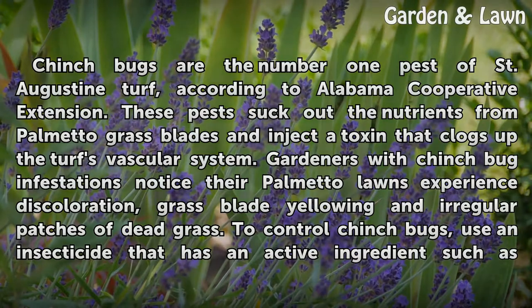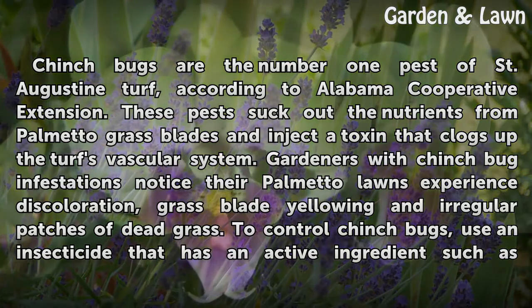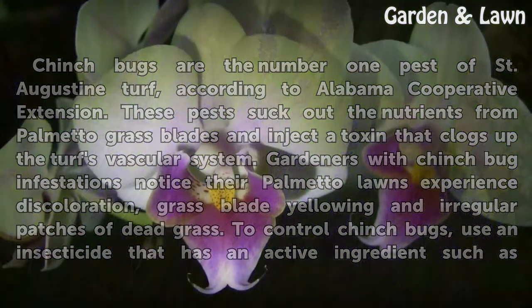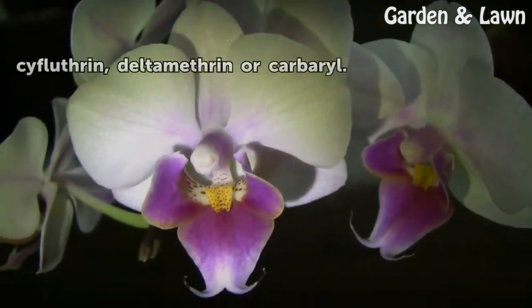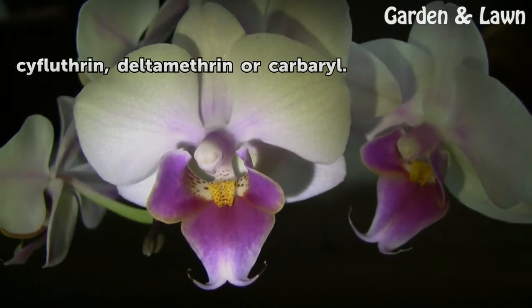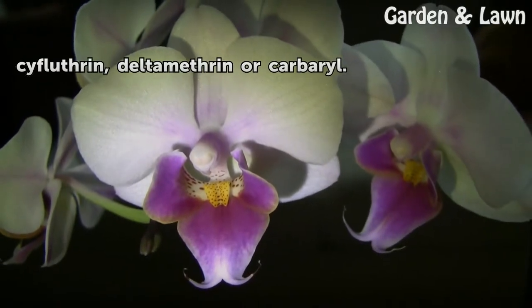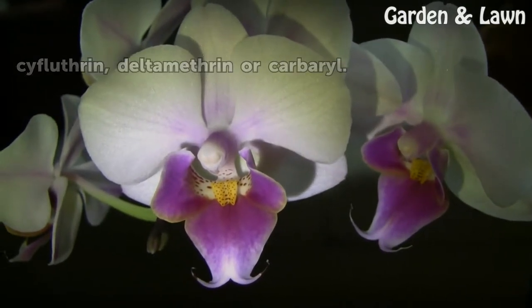To control chinch bugs, use an insecticide that has an active ingredient such as Cyfluthrin, Deltamethrin, or Carbaryl.